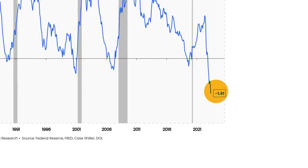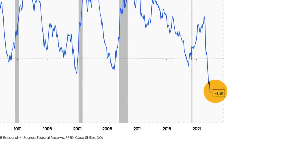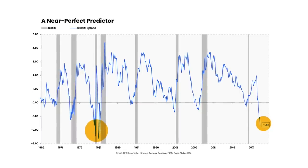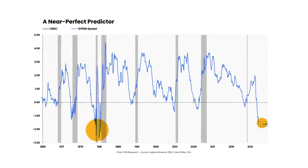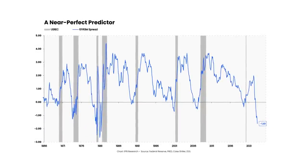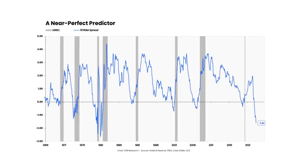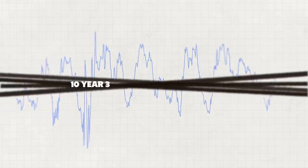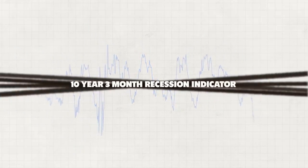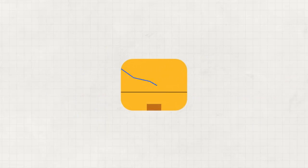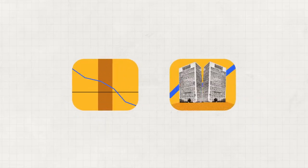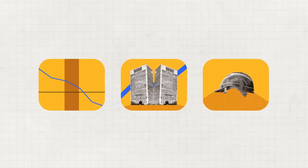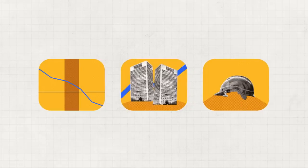Today's yield curve inversion is historic in terms of depth, only rivaling the double 1980 recession. In this video, we'll review the painfully accurate 10-year 3-month recession indicator and highlight the wide distribution of outcomes for recession timing, stock market performance, and labor market data after receiving this highly important economic signal.